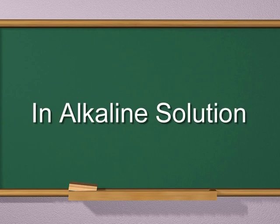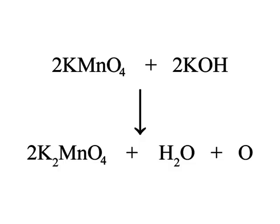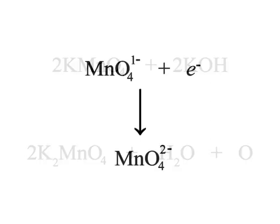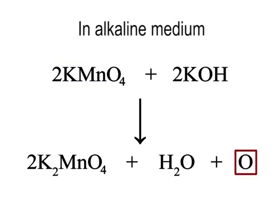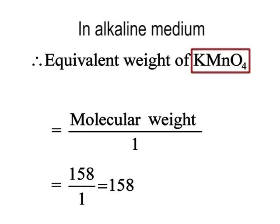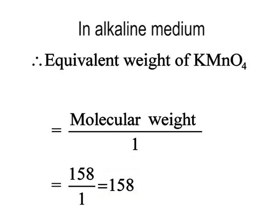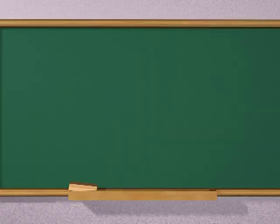In alkaline solution, potassium permanganate reacts with potassium hydroxide to form potassium manganate, water and nascent oxygen. According to the ionic equation shown, in alkaline medium, 2 moles of permanganate form 1 nascent oxygen atom. Hence, the equivalent weight of potassium permanganate in alkaline medium is 158, obtained by dividing the molecular weight by 1.